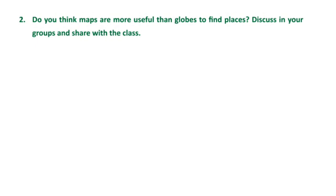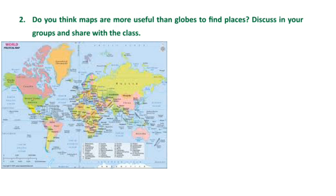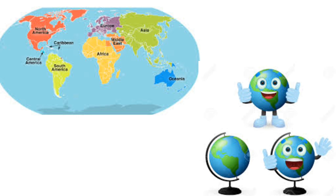Do you think maps are more useful than globes to find places? Discuss in your groups and share with the class. Maps are more useful than the globe to find places as they are the actual drawing of a place. Maps are of different types — they can be of a city and a neighborhood too. It is much easier to see the location of a place in a map. A globe only shows the continents and the water bodies around them. Students may come up with points other than these.